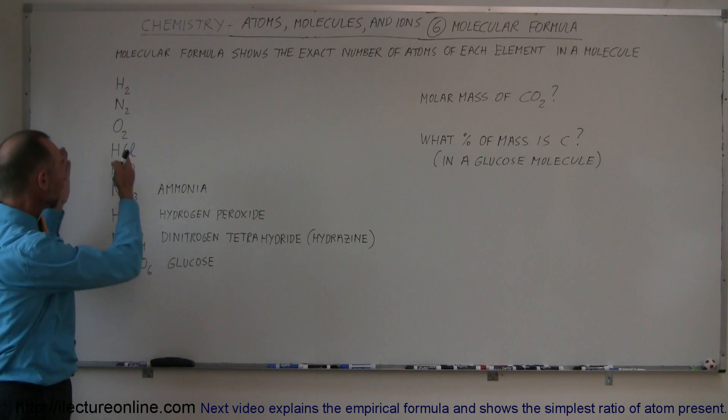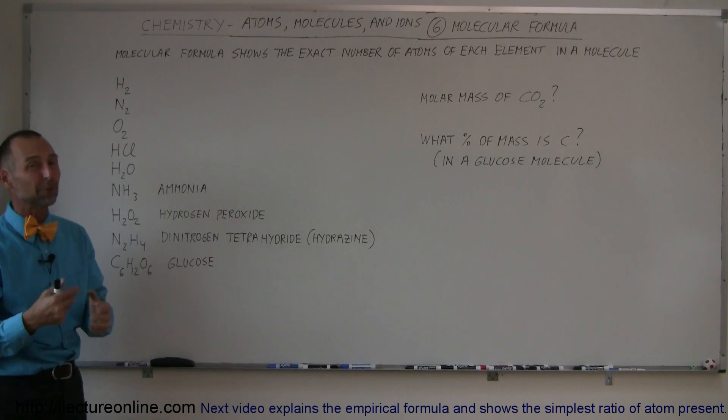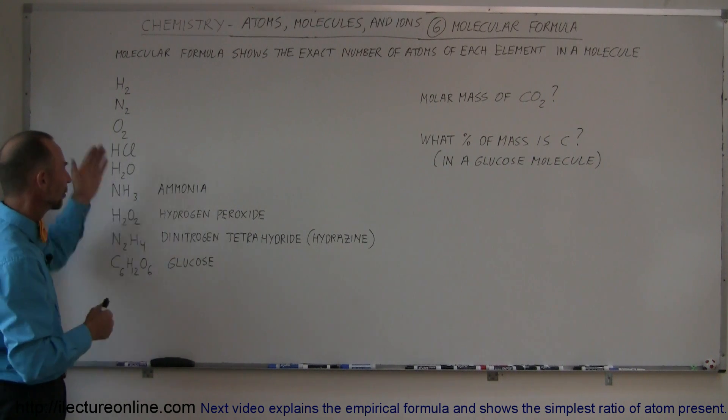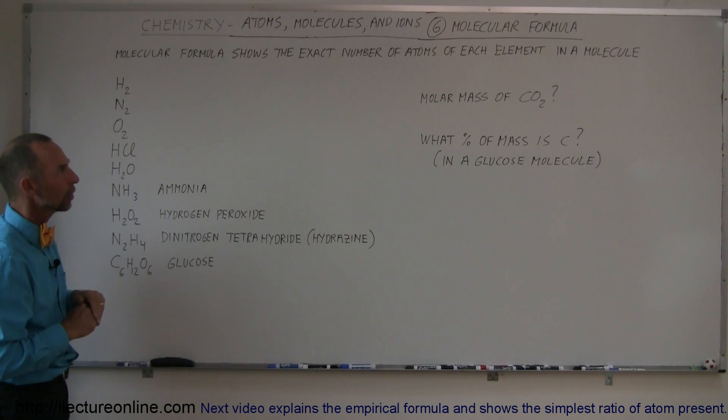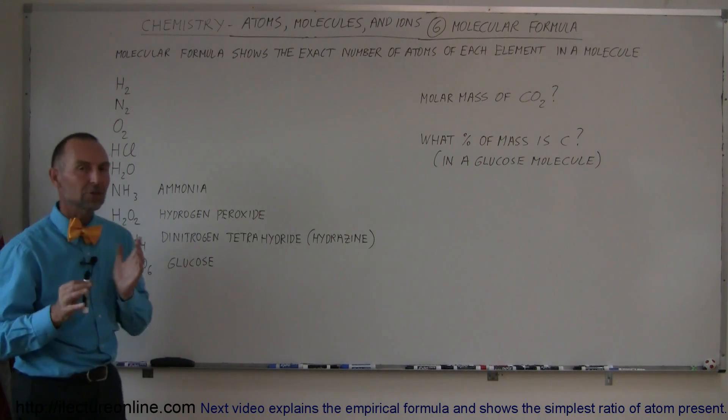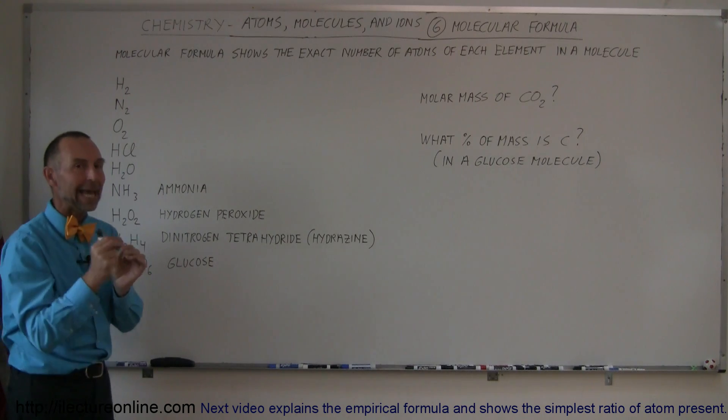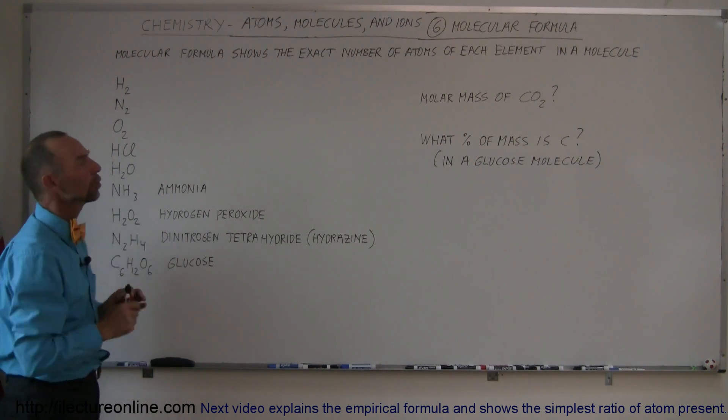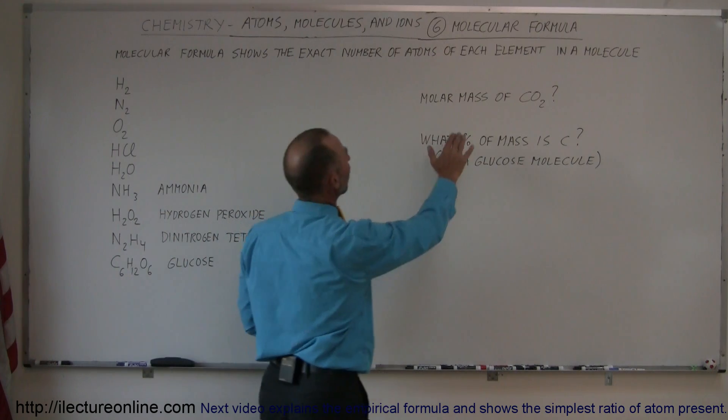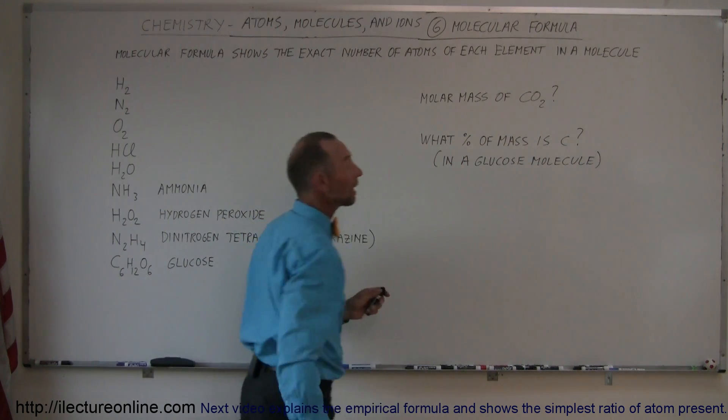So now that you understand how we set up formulas, and of course the names can get quite complicated, we want to at least understand that once you know how a molecule is formed and how many atoms of each type or each element are within that molecule, we should be able to figure out things such as the molar mass of carbon dioxide.